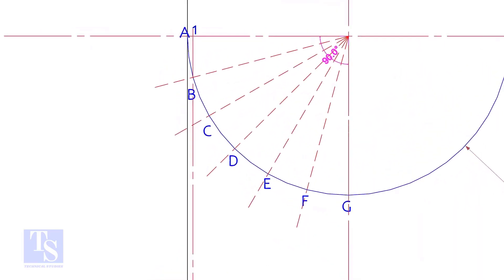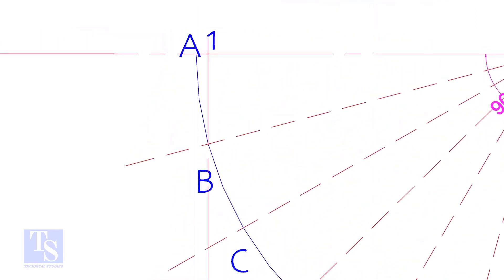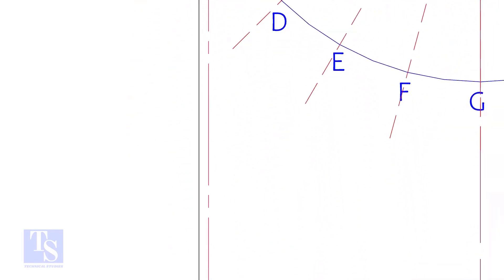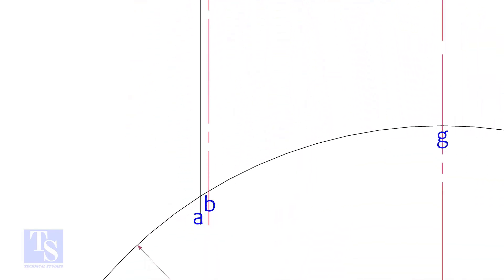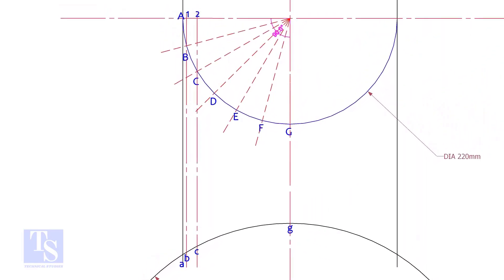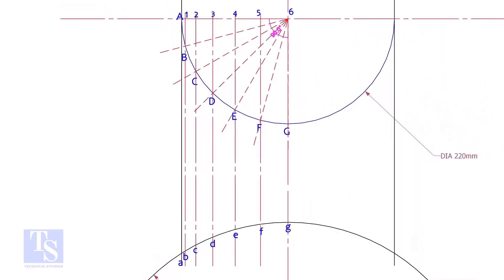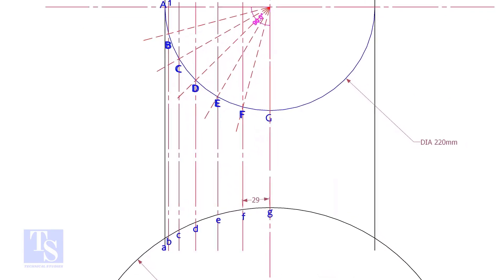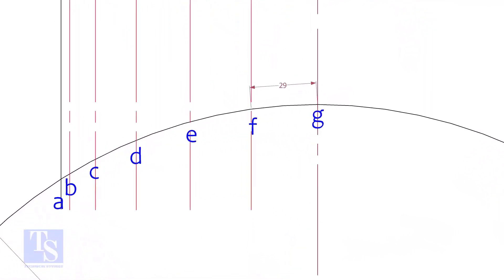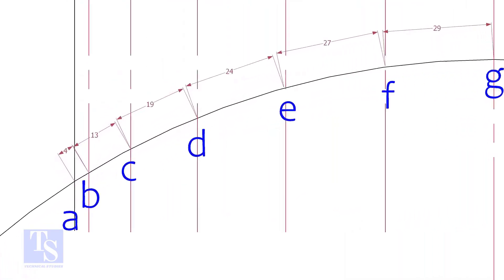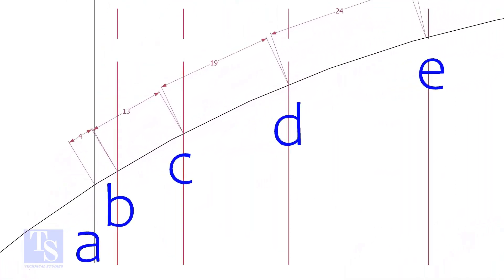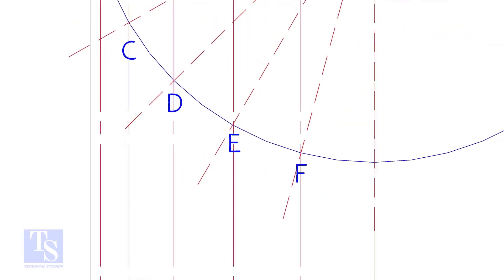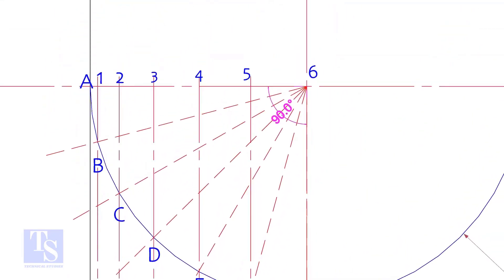Draw perpendicular lines BBCC etc. Measure and note down the arc lengths GF, FE etc. Don't measure the chord length. Hope you all know the difference between the arc length and the chord length.